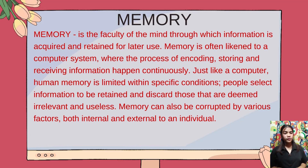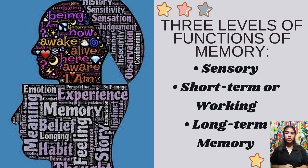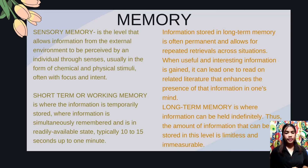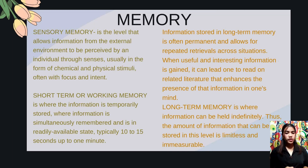Memory can also be corrupted by various factors, both internal and external to an individual. There are three levels of functions of memory. These are sensory, short-term or working, and long-term memory. Sensory memory is a level that allows information from the external environment to be perceived by an individual through the senses, usually in the form of chemical and physical stimuli, often with focus and intent. In sensory memory, information can be grasped even at a split second. However, not all stimuli are perceived by sensory memory. The mind can only accommodate sensory information that will be useful, which is then transferred to one's short-term memory.